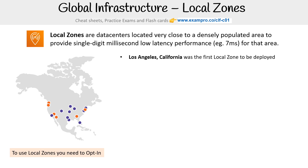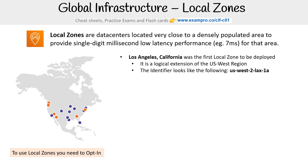The first one ever launched was the LA one. When you want to see it, it looks just like an availability zone — it's going to show up under whatever region it is, because these are always tied to existing regions. So the LA one is tied to the US West region, and the AZ would look like US-West-2-LAX-1a.